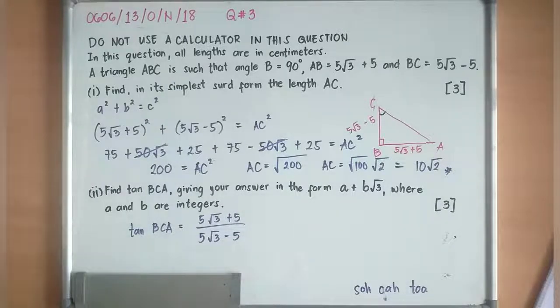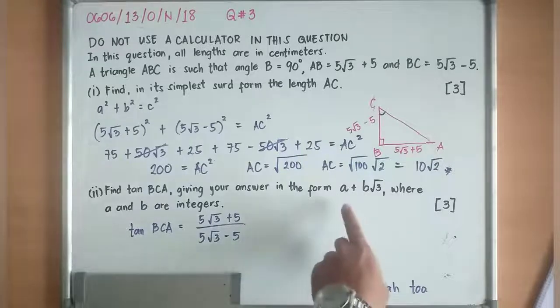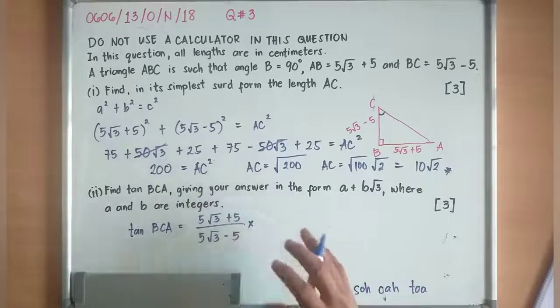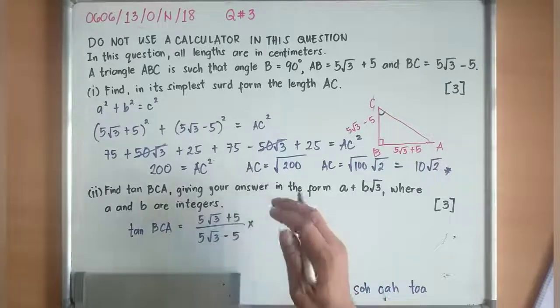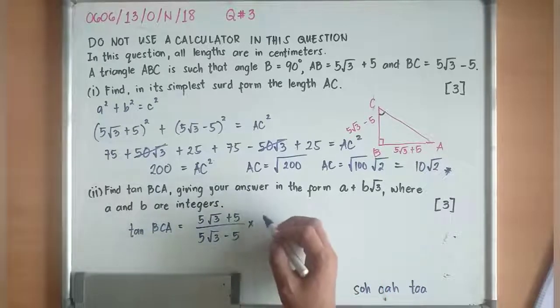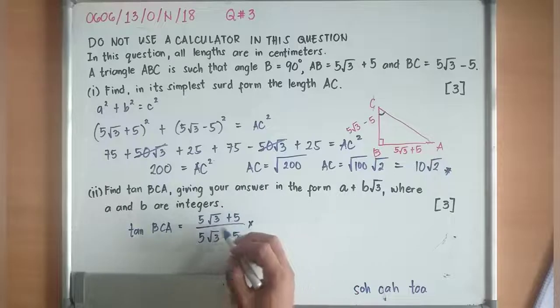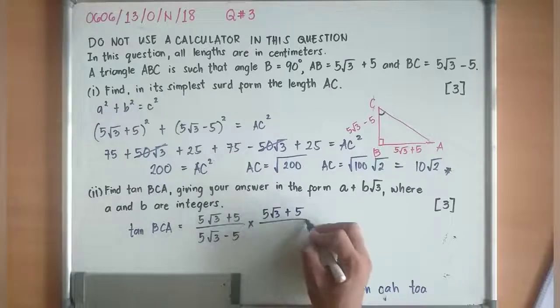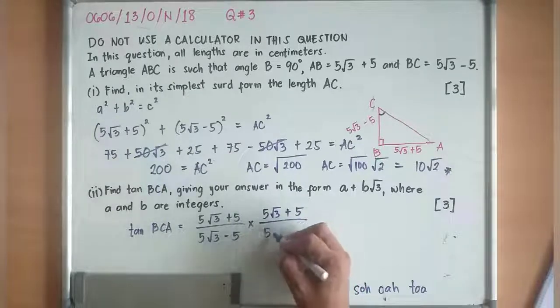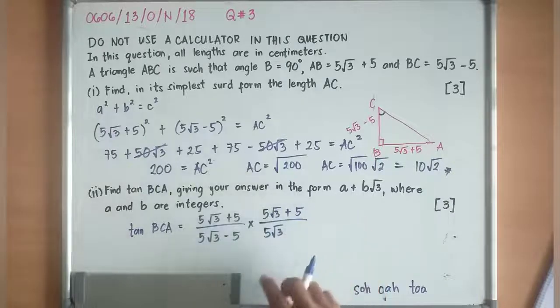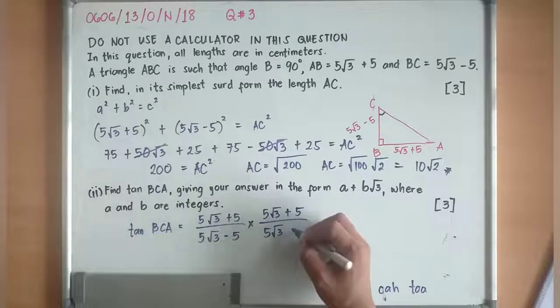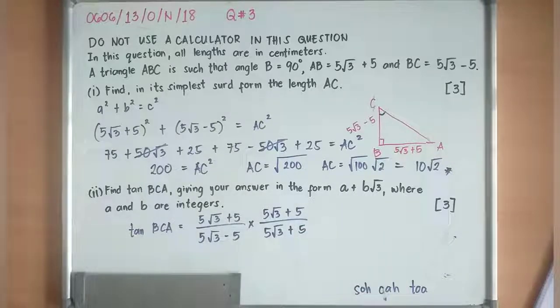But you cannot leave it like that because we have to do it in this form. So I just need to, what do you call this process? This process now is what you call rationalization. And when we talk about rationalization, we have to multiply both the numerator and the denominator with the opposite operation for this, I'll have 5√3 + 5. Why plus 5? So that if I'll apply the product of a sum and a difference, I can immediately remove now the surd from the denominator.